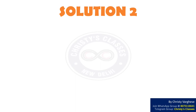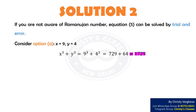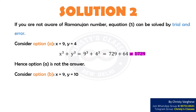Now let us consider an alternate method. If you are not aware of the Ramanujan number, equation 5 can be solved by trial and error — put each of the answer options and see which option satisfies equation 5. Consider option A: x equals 9 and y equals 4. Then x³ + y³ = 9³ + 4³ = 729 + 64, which is not equal to 1729. Hence option A is not the answer. Checking option B confirms it satisfies the equation, so option B is the right answer.